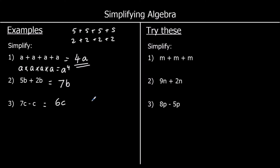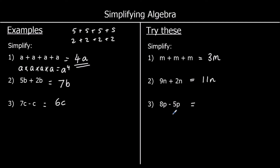OK, 3 for you to try — pause the video and give them a go. Question 1: m plus m plus m is the same as 3 times m, which we write as 3m. Question 2: 9n's plus 2n's — 9 of something plus 2 of something makes 11 of something, so 11n. Question 3: 8p take away 5p — 8 of something take away 5 of something is 3 of something, so 3p.